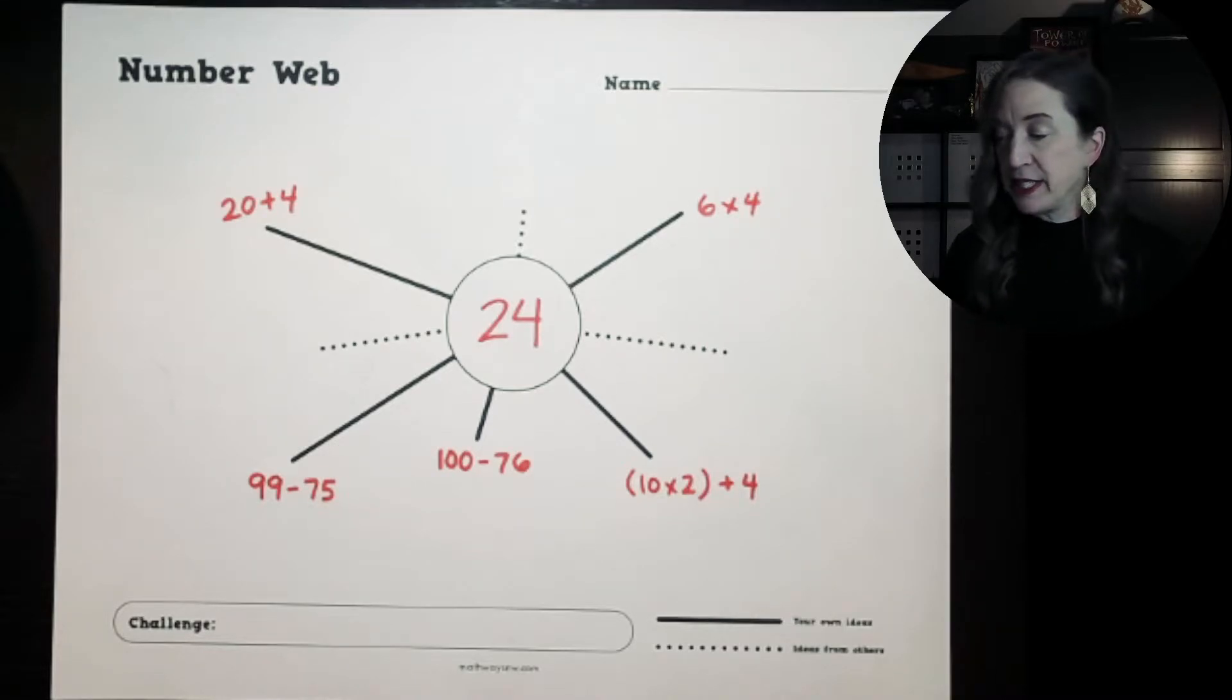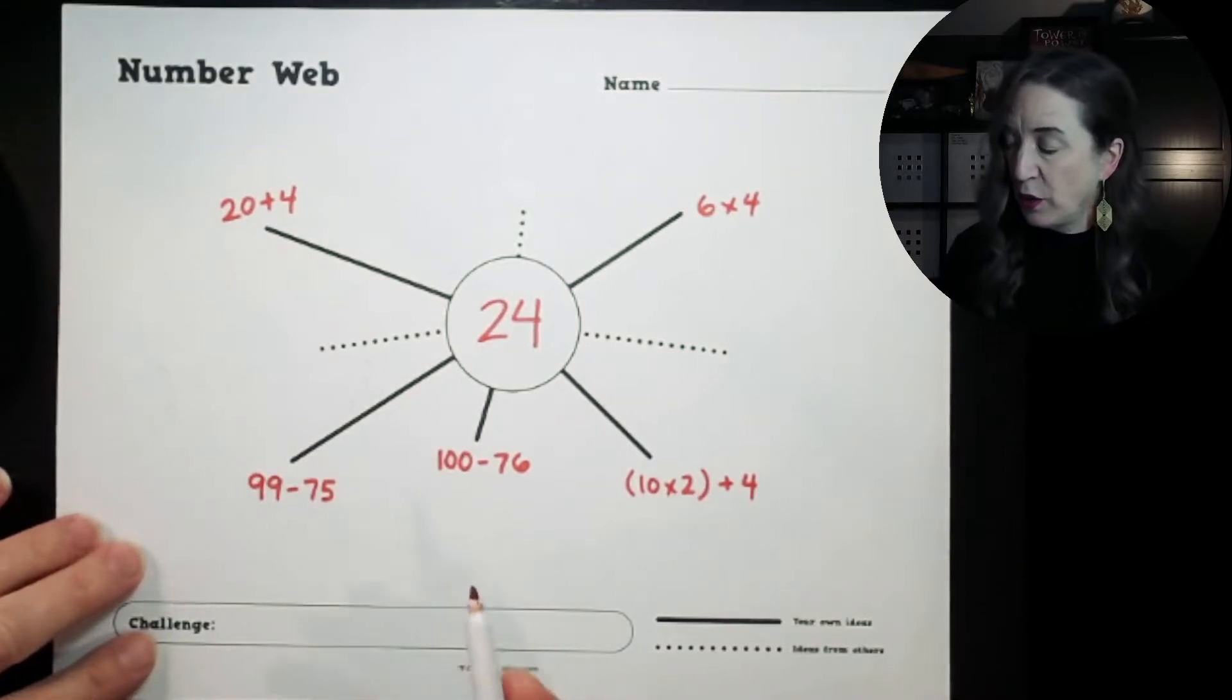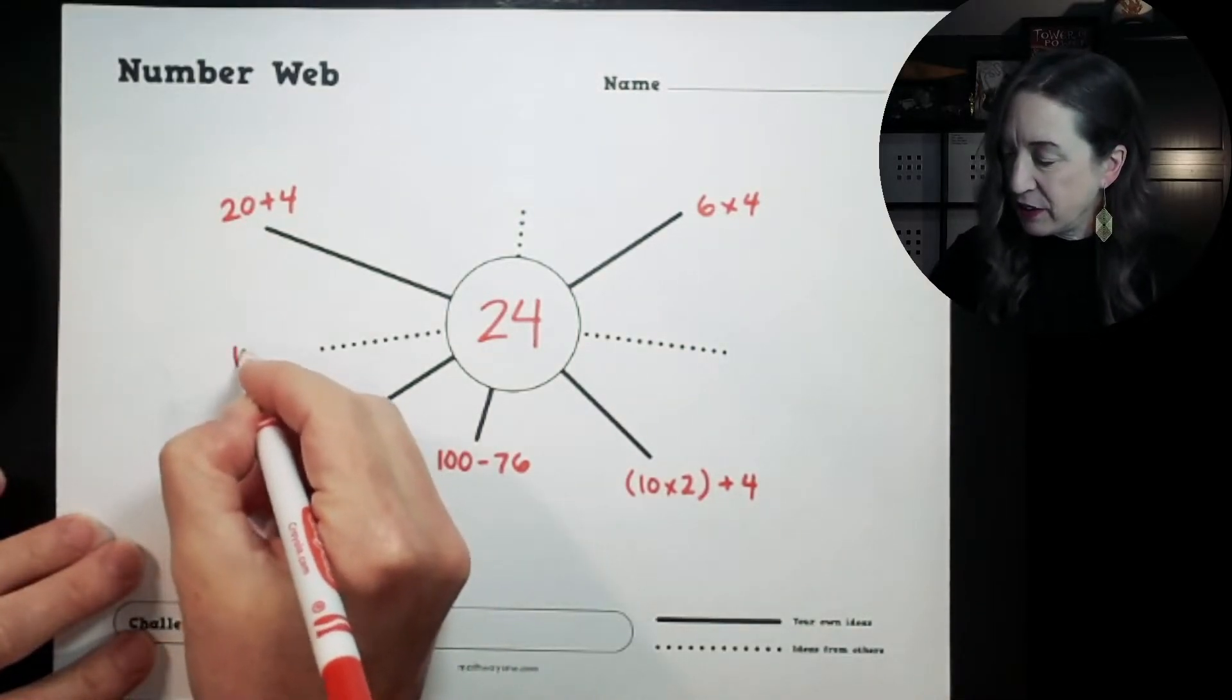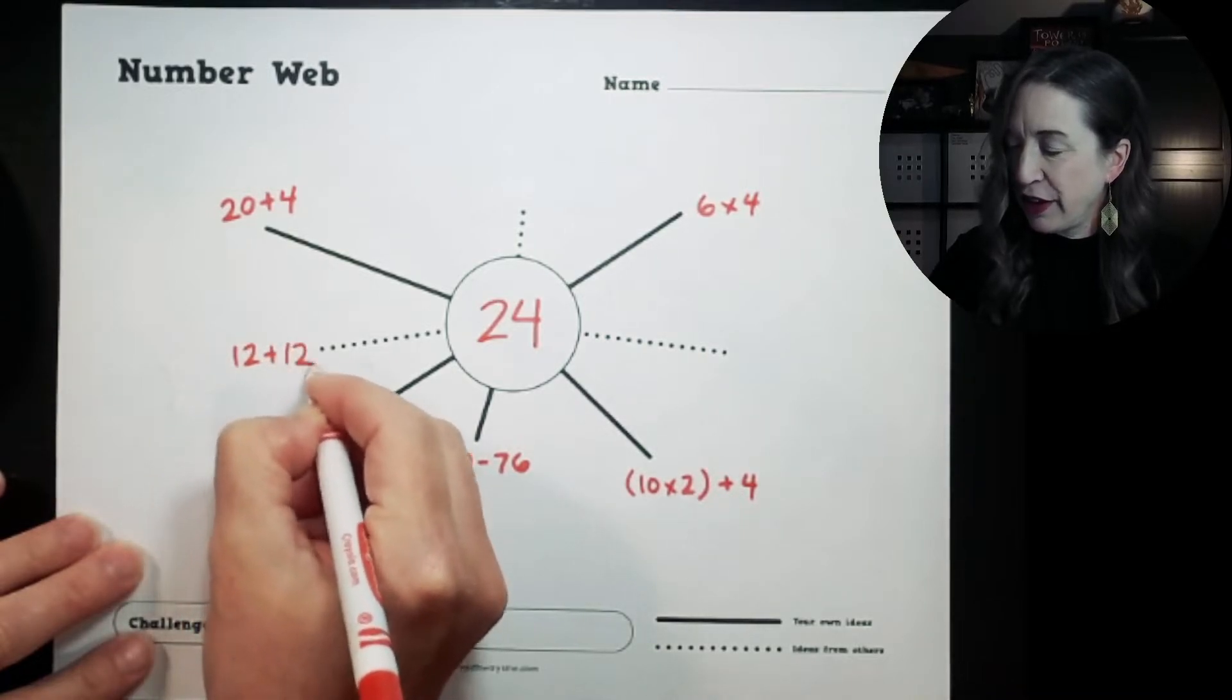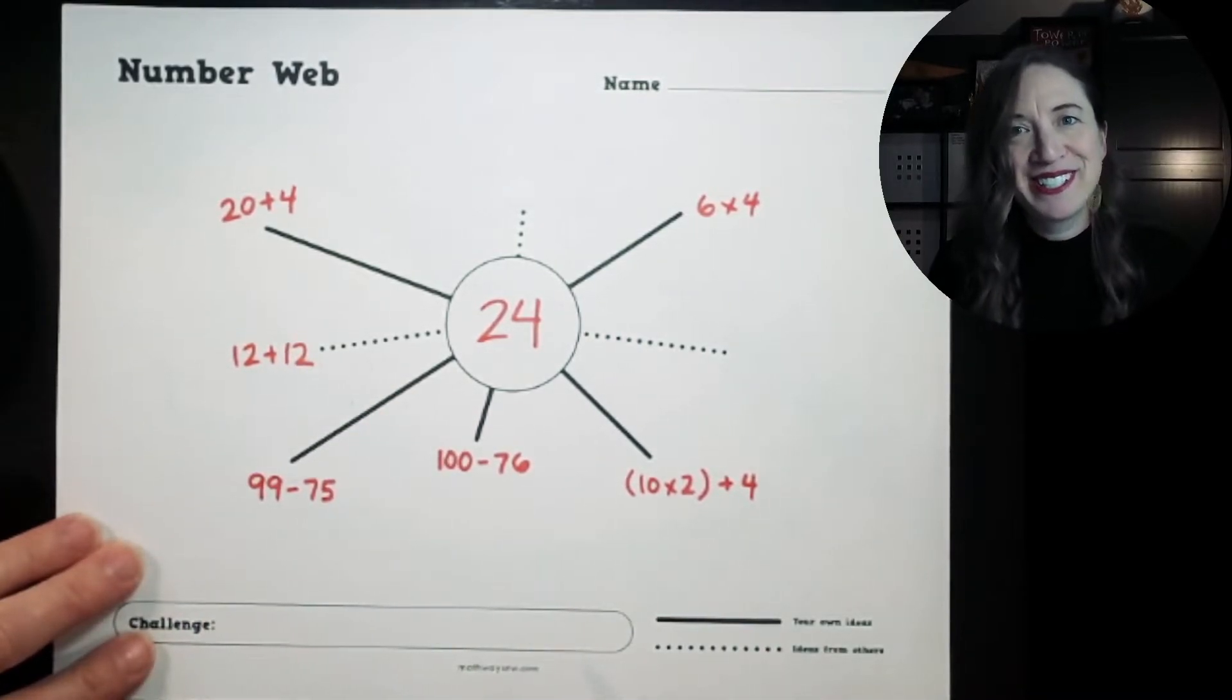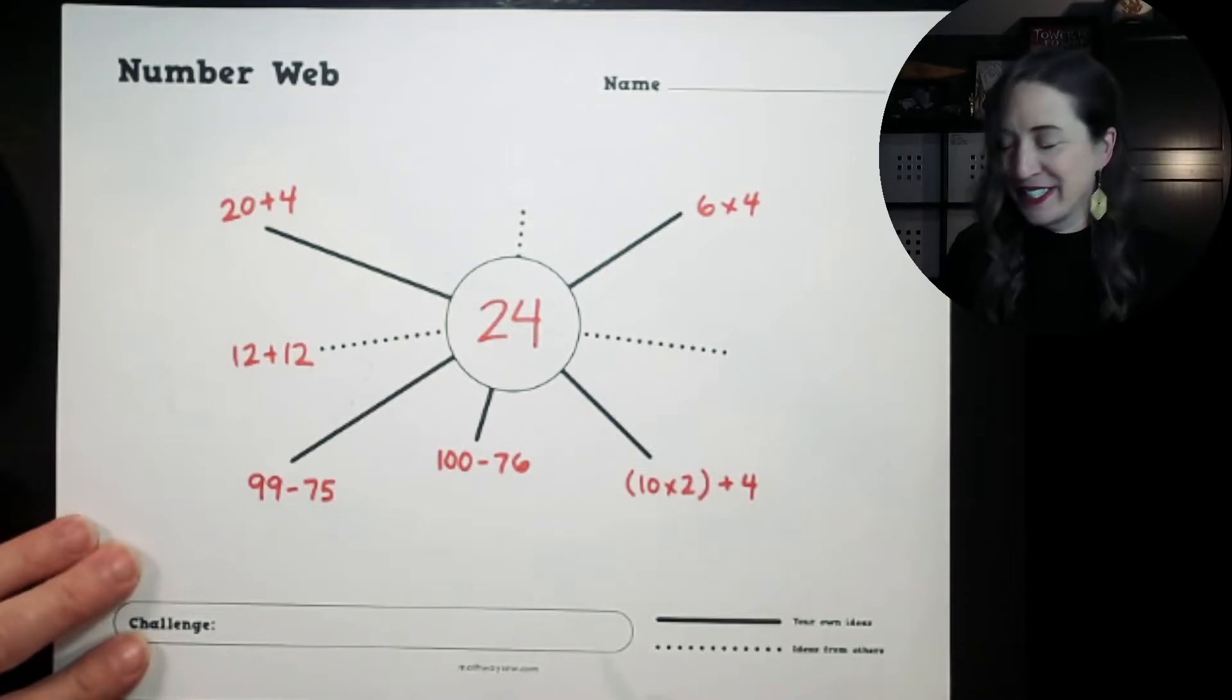So I might go up to one friend and see what they have on their paper, and oh, wouldn't you know it, one of my friends has this down: 12 plus 12. I hadn't even thought of that. 24 is a double. So I'm going to take that idea from that friend.